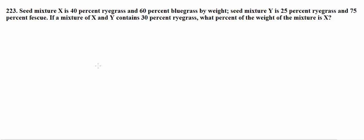So let's start out with number 223. I will leave the link to the GMAT book I use in the description box so that way you can find it if you would like to practice more. So 223 says, Seed mixture X is 40% ryegrass and 60% bluegrass by weight. Seed mixture Y is 25% ryegrass and 75% fescue. If a mixture of X and Y contains 30% ryegrass, what percent of the weight of the mixture is X?